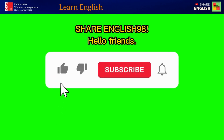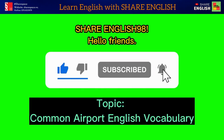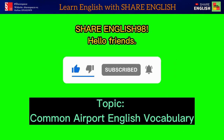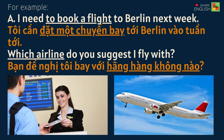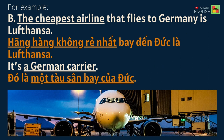Share English 98. Hello friends! Topic: Common Airport English Vocabulary. 1. Airline. For example: I need to book a flight to Berlin next week. Which airline do you suggest I fly with? The cheapest airline that flies to Germany is Lufthansa. It's a German carrier.